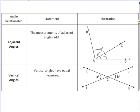The first thing we need to do is review some of the angle relationships we've already talked about this year. The first angle relationship is adjacent angles. From this diagram, we have angle A and angle B, and when you put them together because they're next to each other, they form angle C. So we can conclude that angle A plus angle B is equal to angle C.